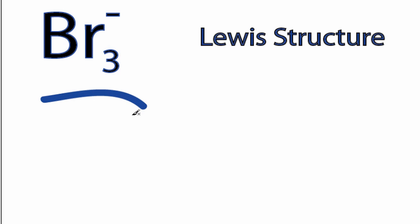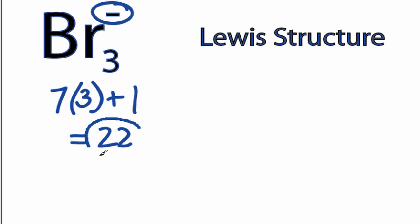This is the Br3 minus Lewis structure. Bromine is in group 7, or 17, so it has 7 valence electrons. We have 3 bromines, and then we need to add in this negative up here, an additional valence electron, for a total of 22 valence electrons for the Br3 minus Lewis structure.